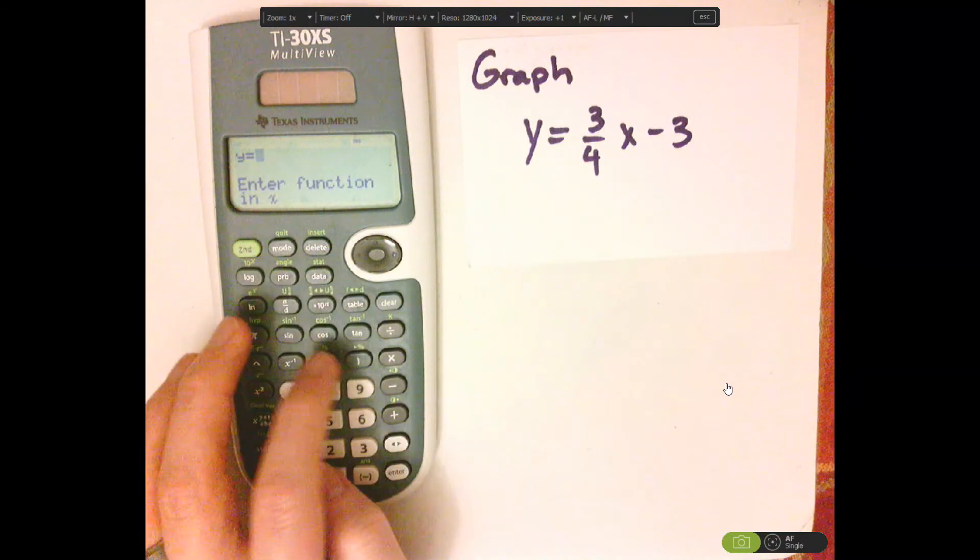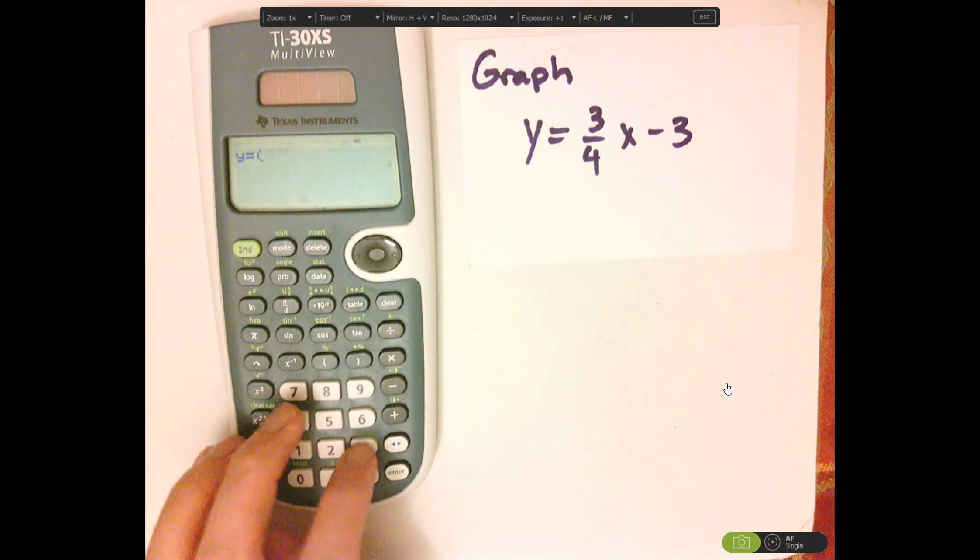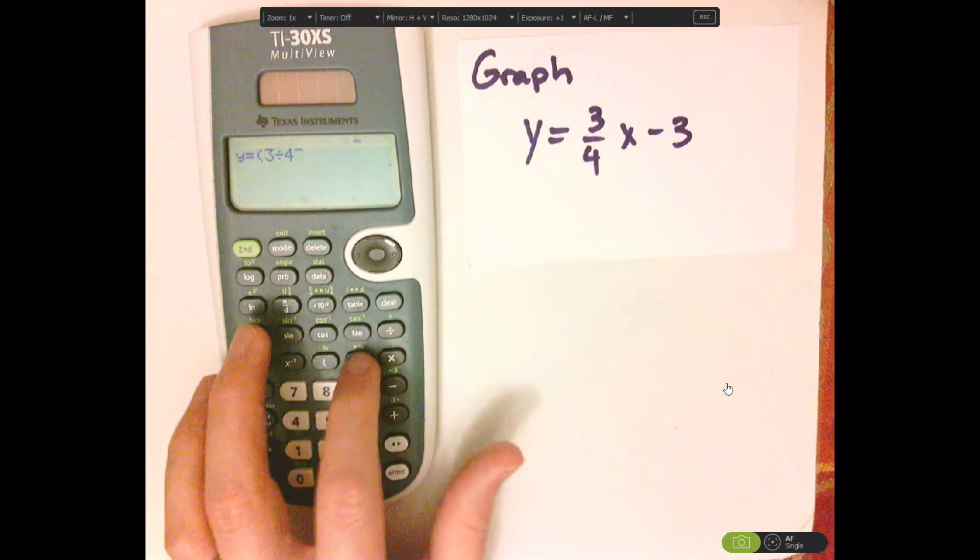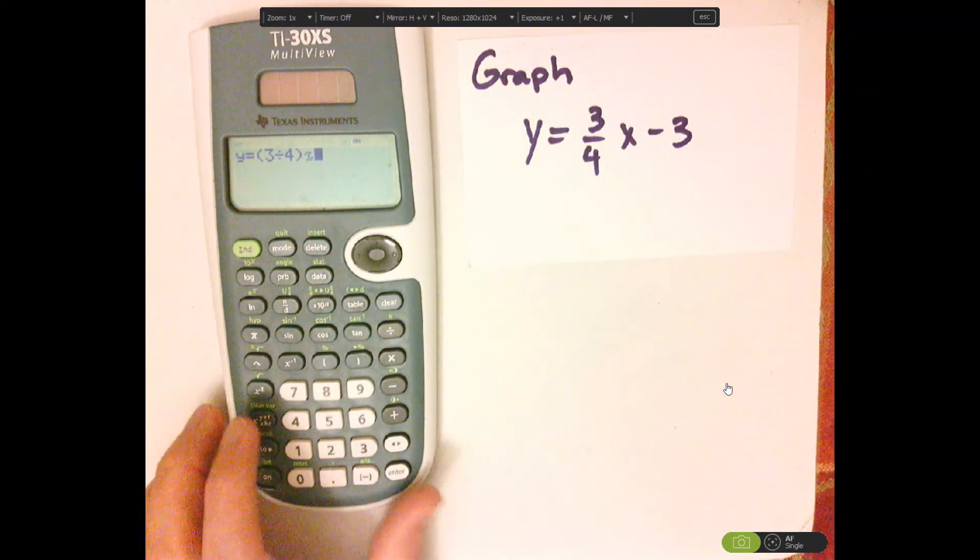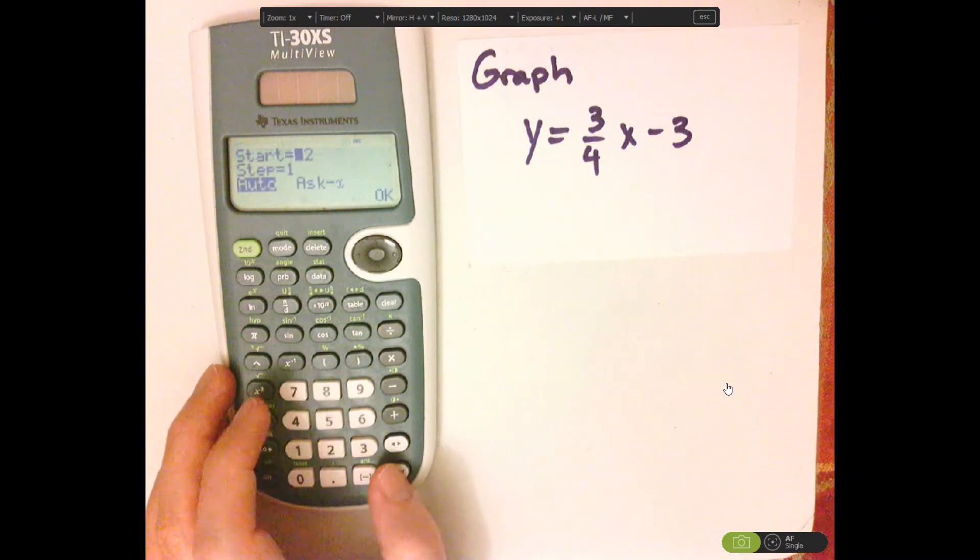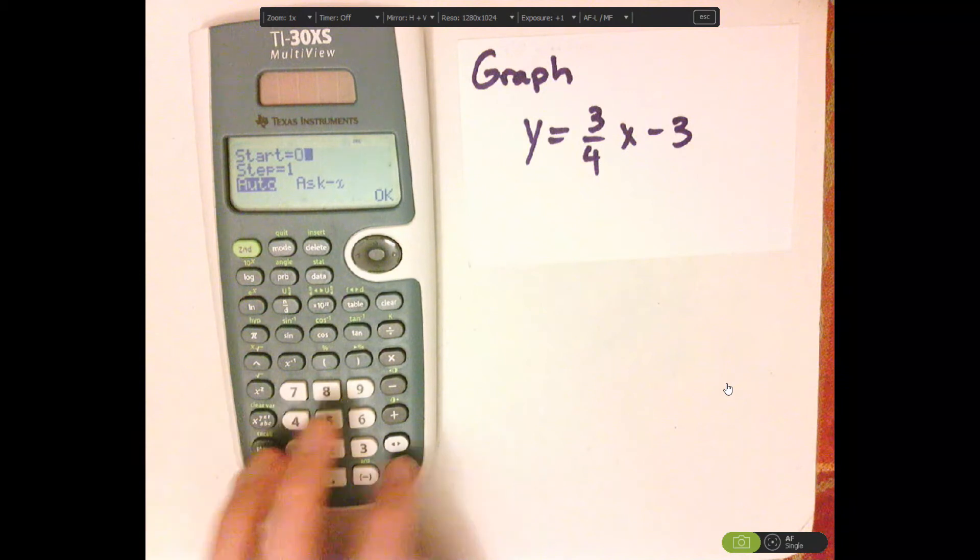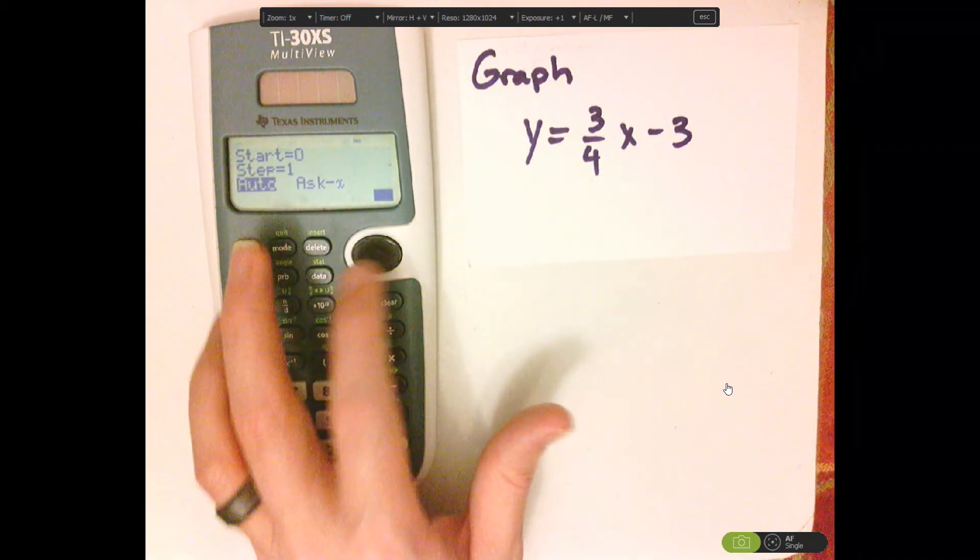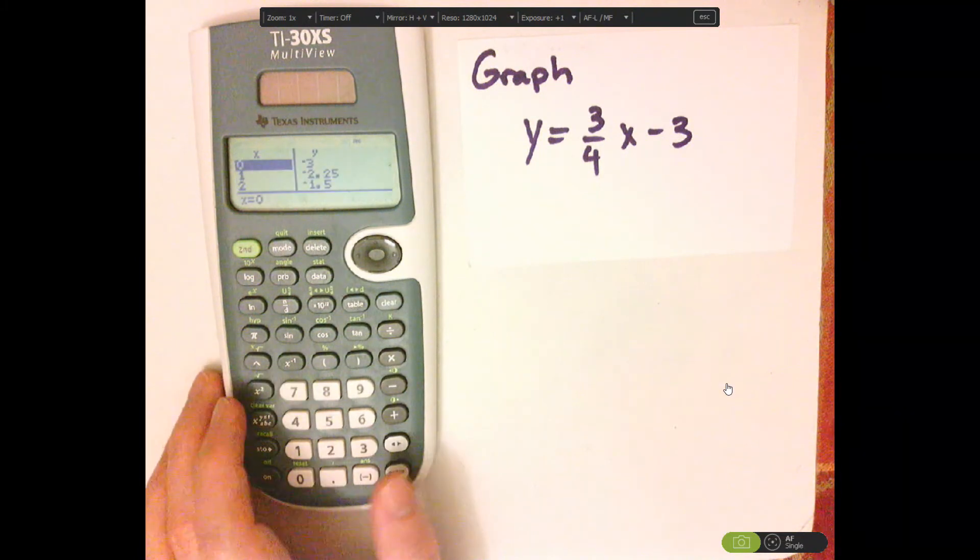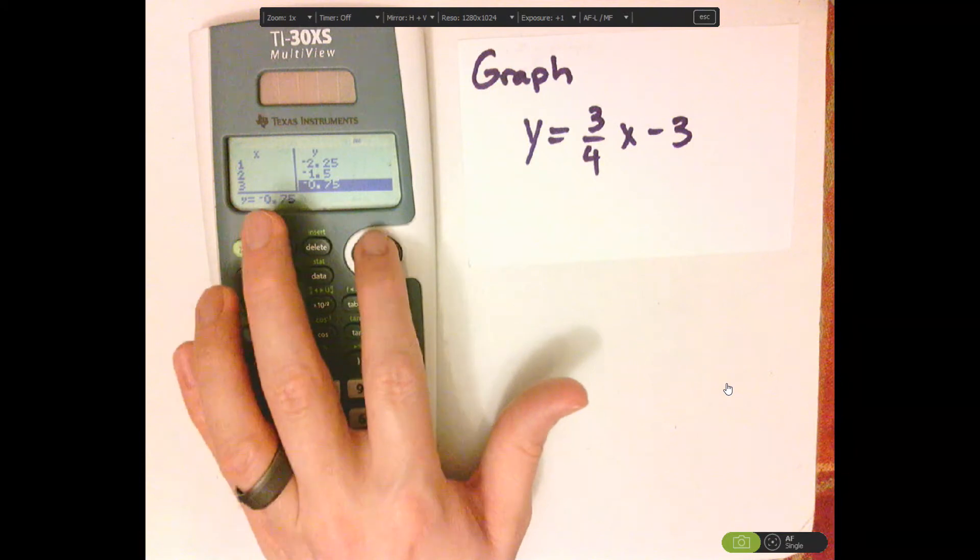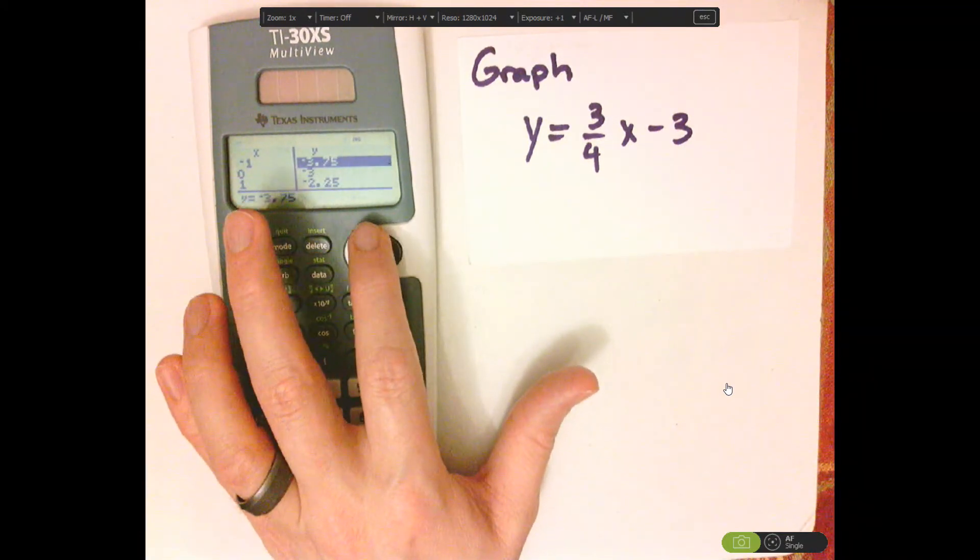now I have to do it again. It's fine. I'm going to put that fraction in a parenthesis like that, X minus 3, enter. Enter, let's do 0, down, enter. And see, now it's a decimal because now it's in classic where it was fractions before, so it's math print.